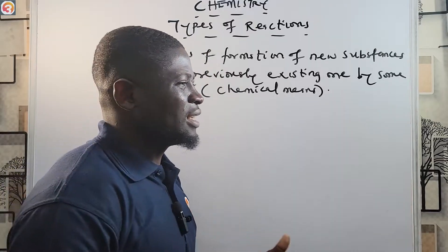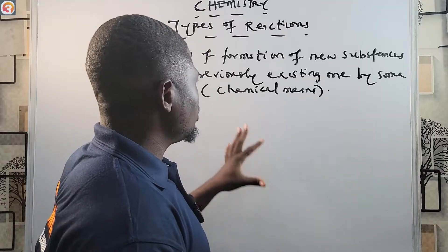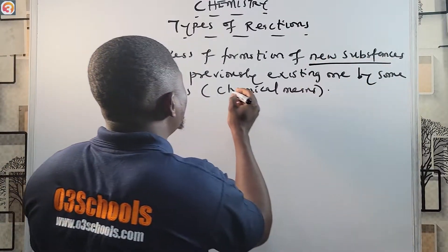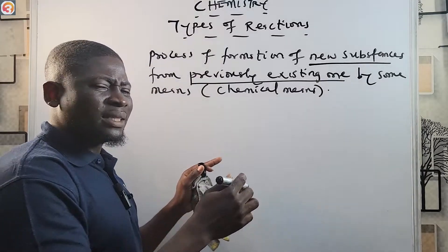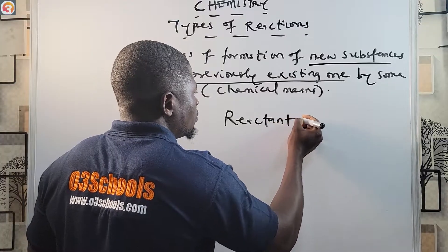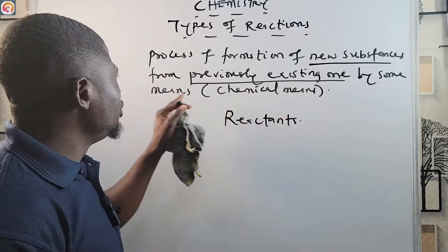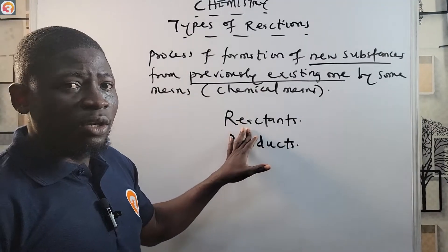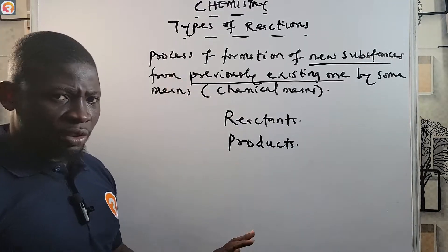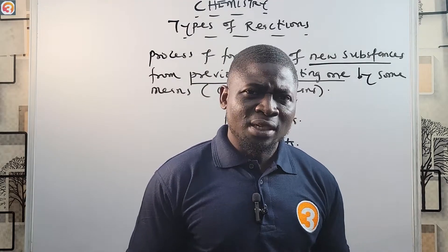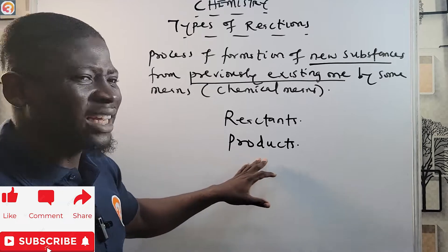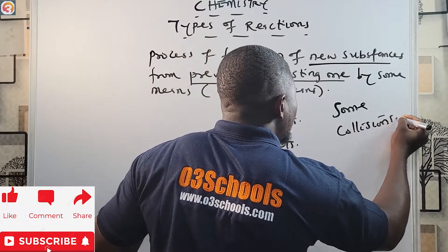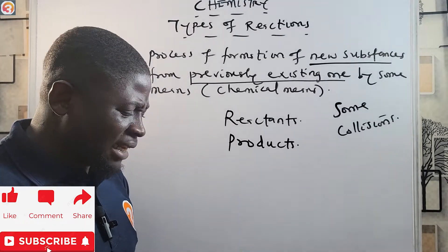So a chemical reaction is a process whereby new substances are formed from previously existing ones by some chemical means. The previously existing substances are called the reactants, while the new substances that are formed are called the products. Now, for a chemical reaction to occur, there must be some collisions between the reactant molecules that are effective.